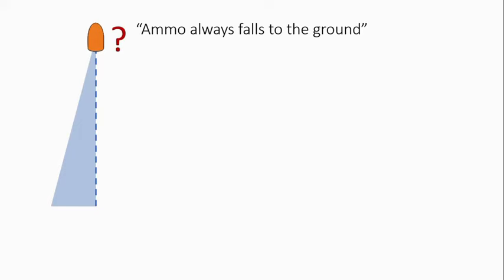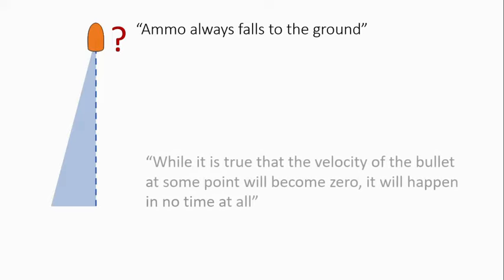I waited three to four days to get an answer, which delighted me. It went like this: while it is true that the velocity of the bullet at some point will become zero, it will happen in no time at all. For me this was something like a koan, which I loved. I struggled for some time to understand it and came up with this explanation — I stress, my explanation: while the bullet traveled along its vertical trajectory, gravity never ceased to act upon it.